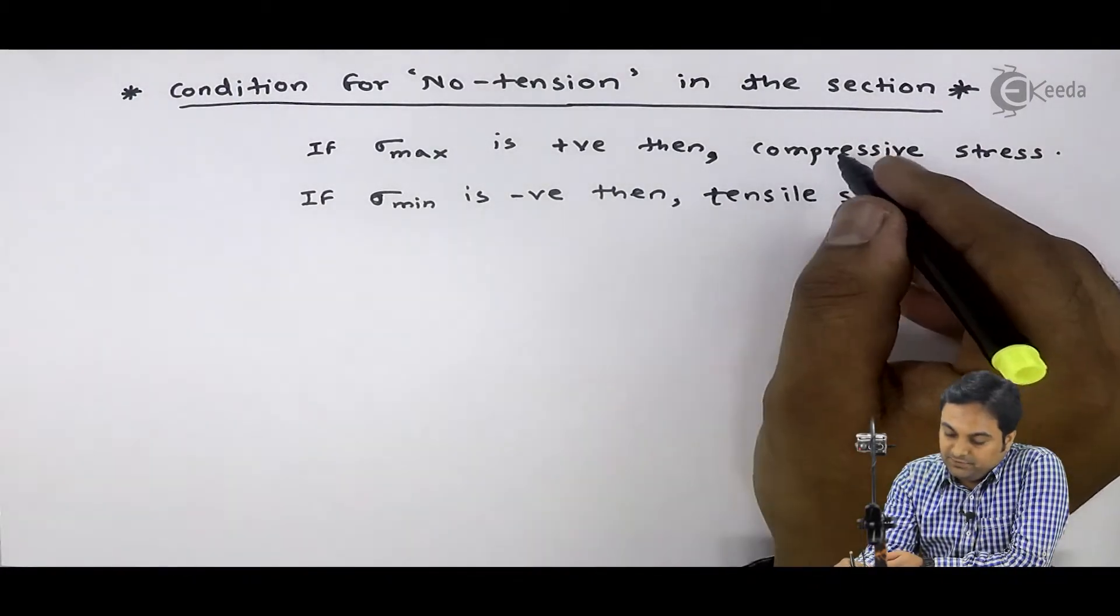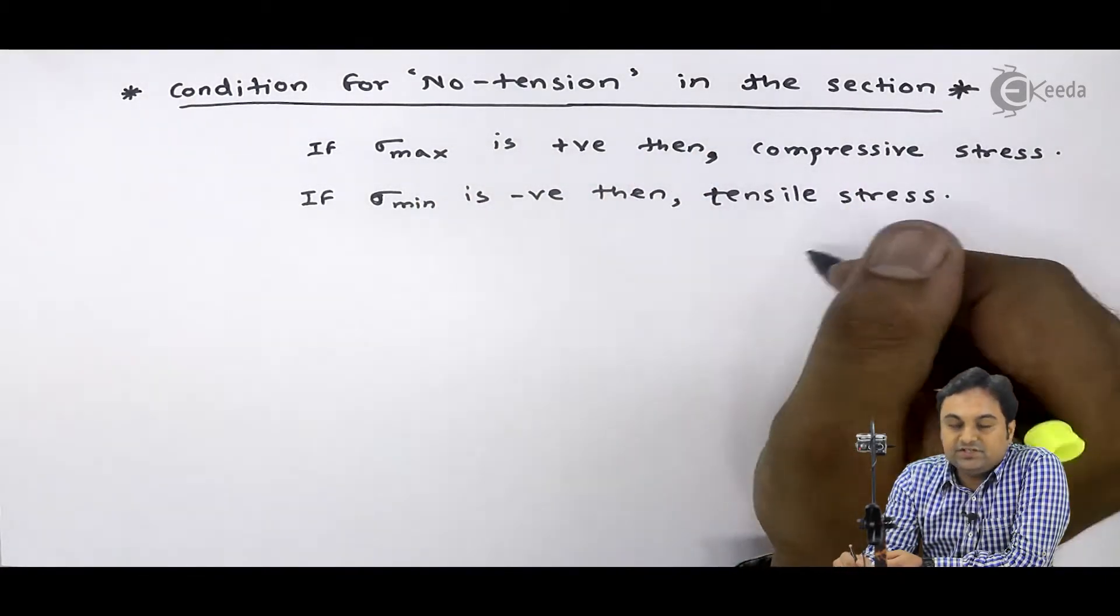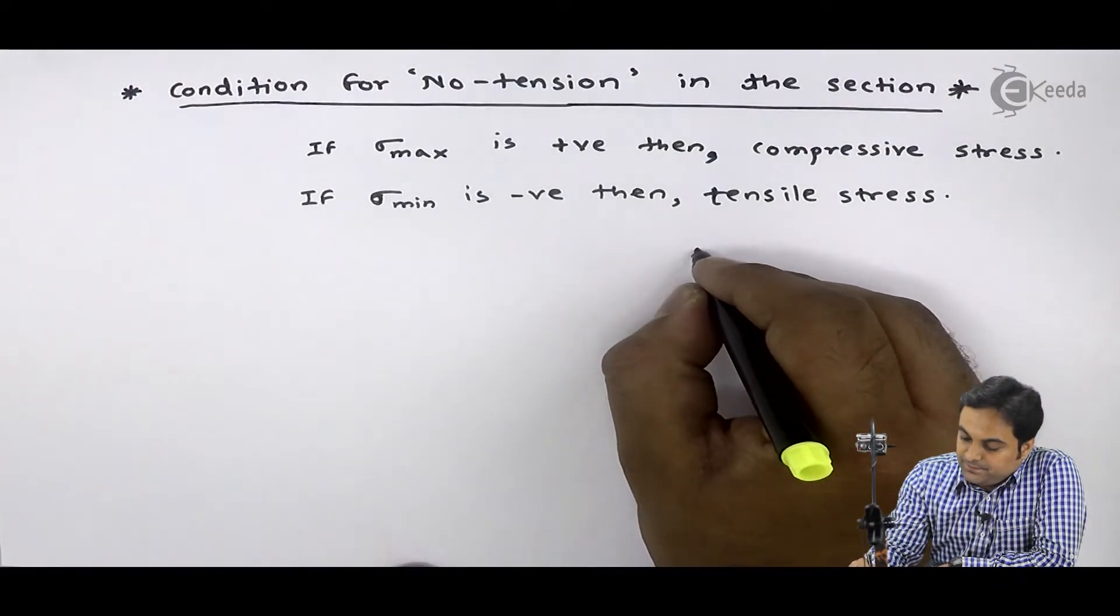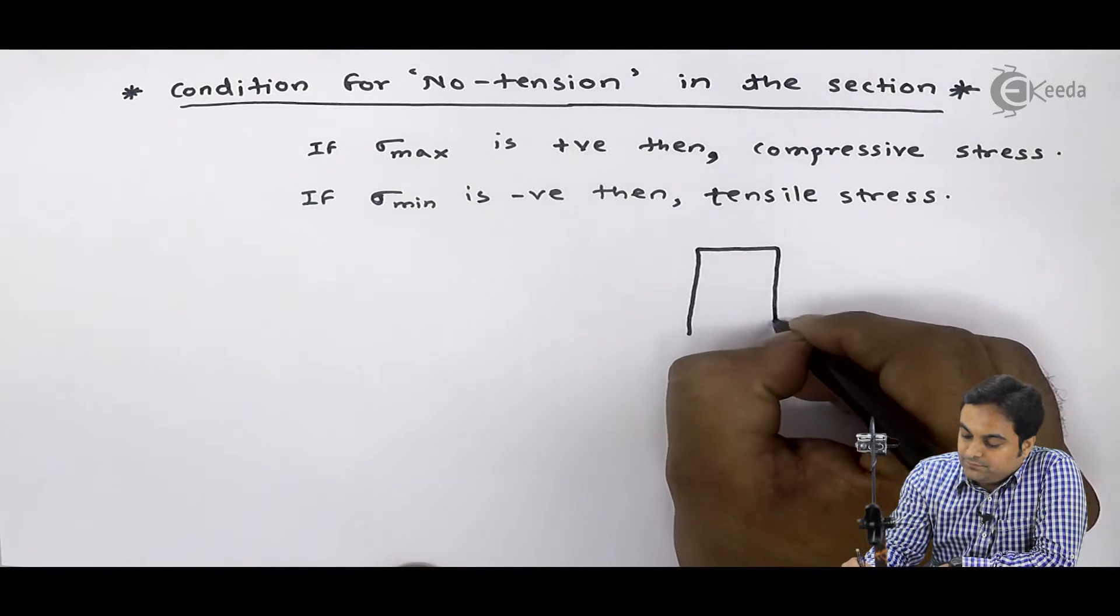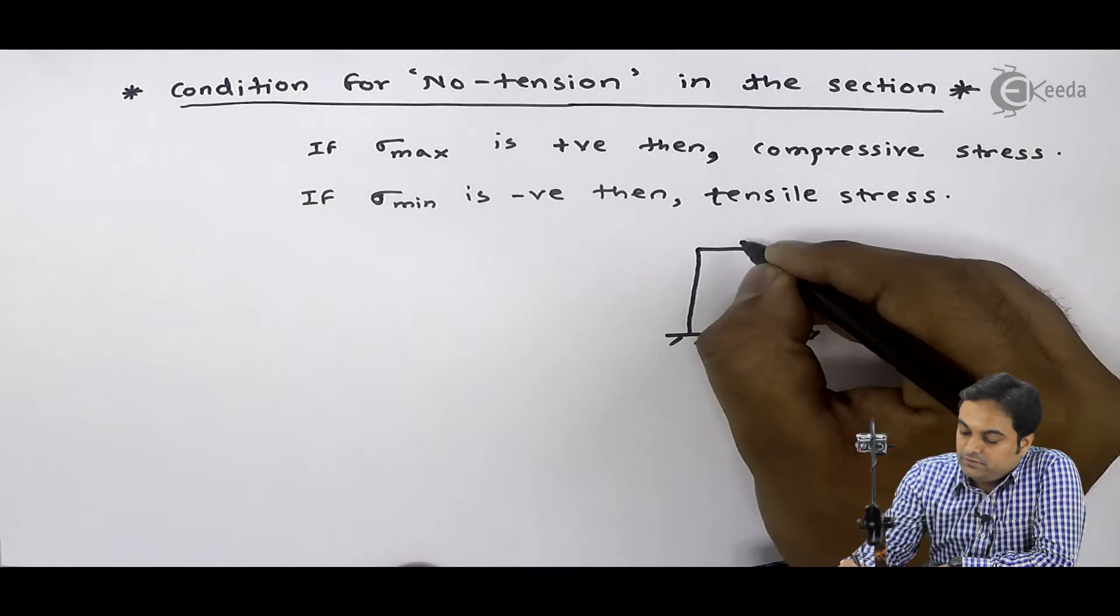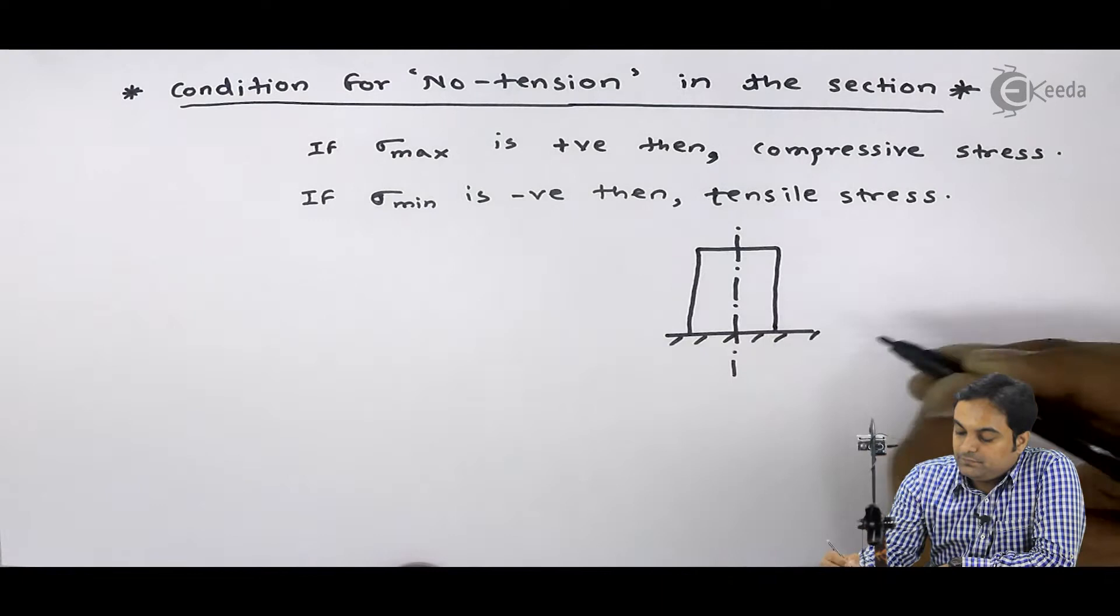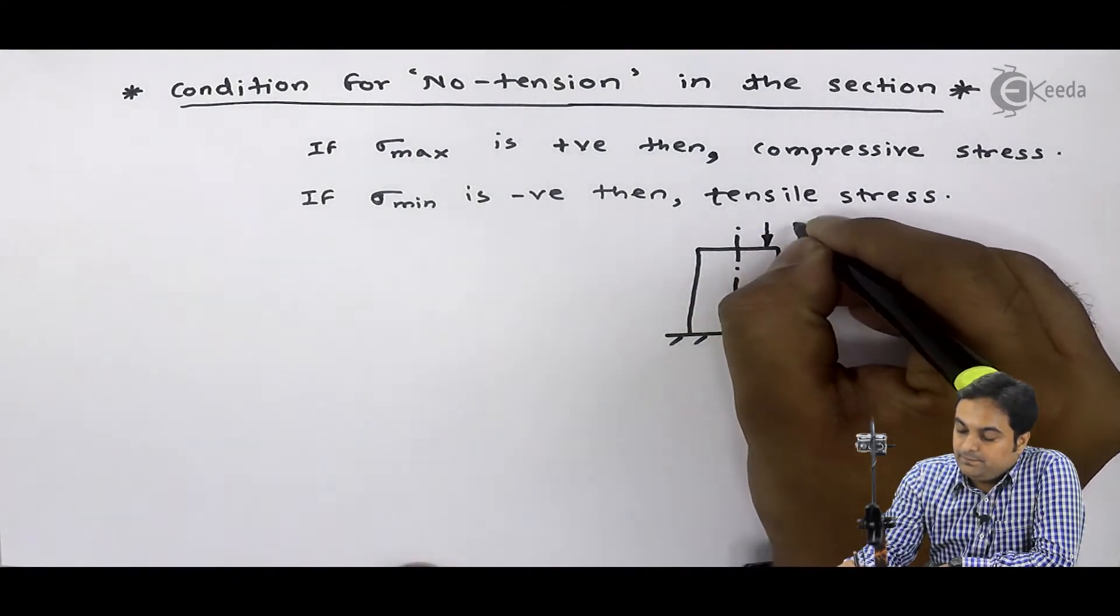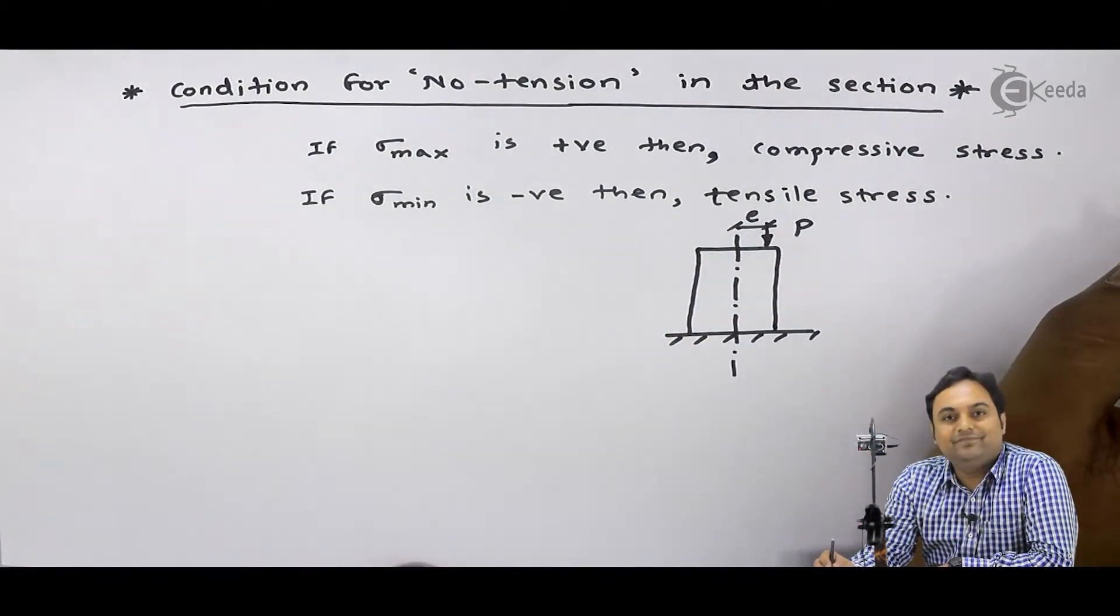See, what is the meaning of compressive stress, tensile stress or no tension condition? If I draw a diagram, just pay attention. If we have a column here, here I have the axis of the column. Load P is located at eccentricity small e.